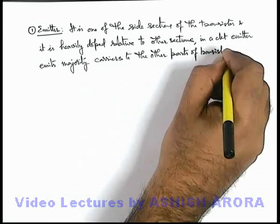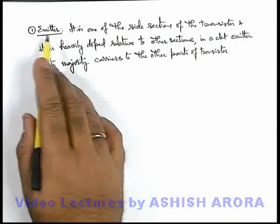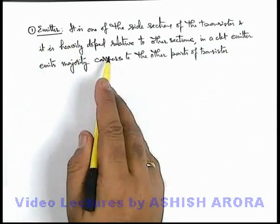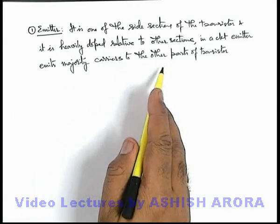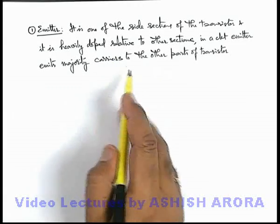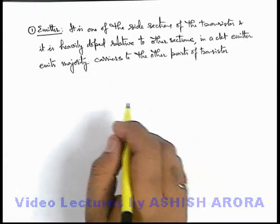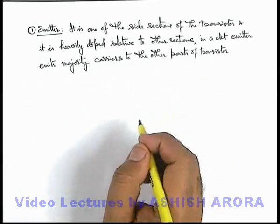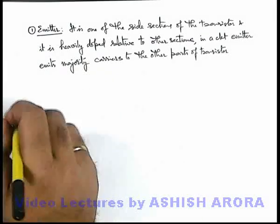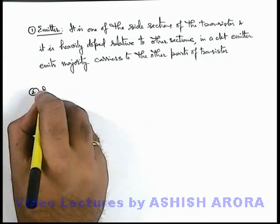Basically we can say in case of n-p-n transistor, if emitter is n-type, it emits electrons to the base and collector. And if it is p-n-p transistor and emitter is of p-type, then emitter emits holes, several number of holes to base and collector.